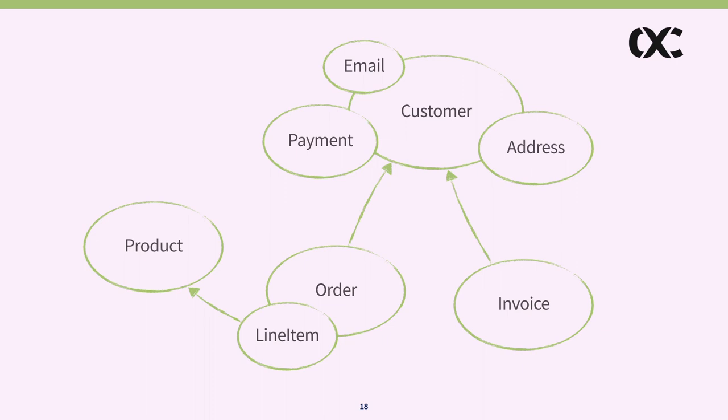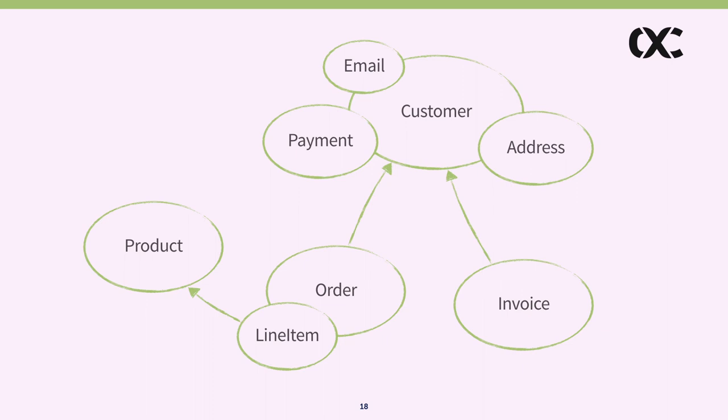Interestingly, document stores like MongoDB already differentiate between embedding things — nested documents — and relationships to other documents like DBRefs. So even the choice of persistence technology influences how you think, unless you take a step back. What we've done is casually but deliberately group entities into aggregates — that's the term Eric Evans uses.